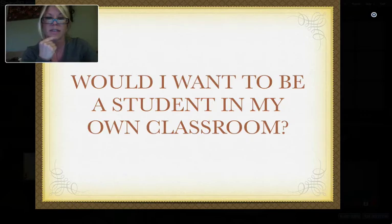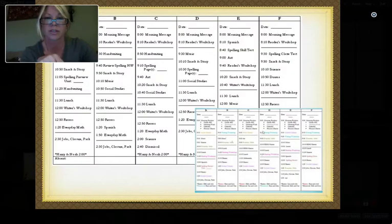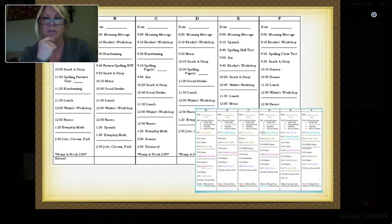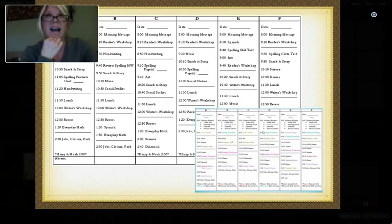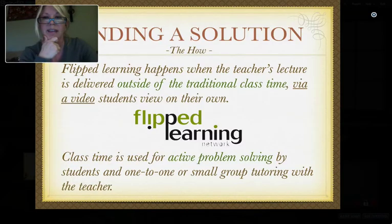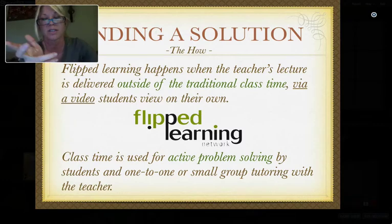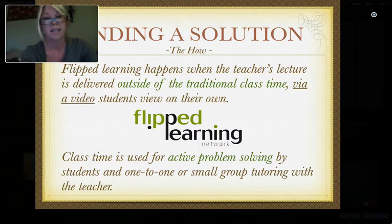One of the things that started me on this journey was thinking about whether I would truly want to be a student in my own classroom. Having two children of my own — Jacob is 7 and Riley is 10 — I really think about what I would want for them. When I started thinking about my schedule — we're on an A through F instead of Monday through Friday — I noticed I was standing in front just doing Lesson 8 of Unit 6 in Everyday Math and pouring content into these children. Being in a second grade classroom, I knew from my population that I could not do a traditional flipped classroom model at the time.